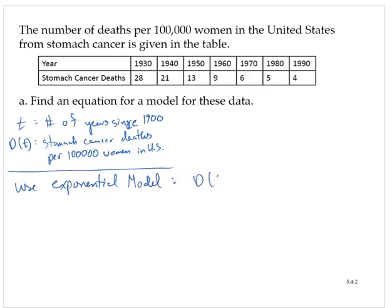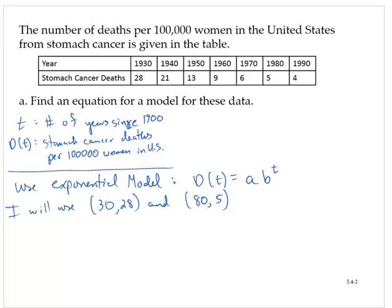We're going to model this as d(t) = a · b^t. Now let's use two points. How to choose the points is sometimes fairly difficult, but I'm going to choose points that are fairly far away from each other. I'll use the points (30, 28) and (80, 5). Using those two points, I'll write two equations based on the model, using the technique we talked about in previous problems.